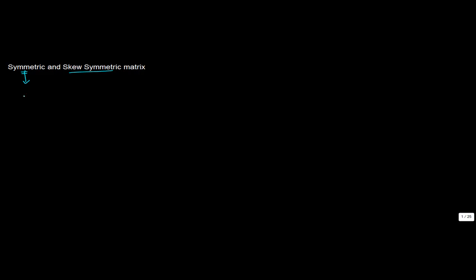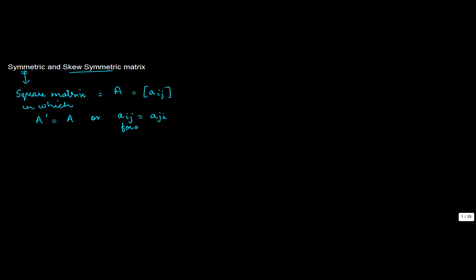Let's understand symmetric and skew symmetric matrices. First, a symmetric matrix is basically a square matrix — let's call it A — in which the transpose of A is equal to A, or equivalently, aij is equal to aji for all values of i and j. Let me give you an example.